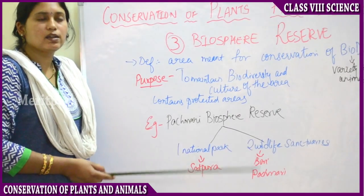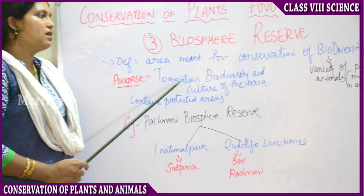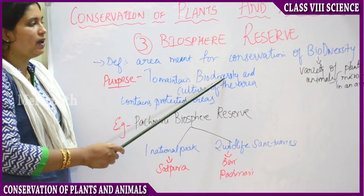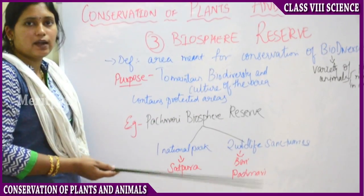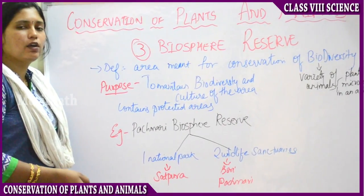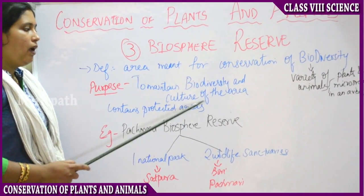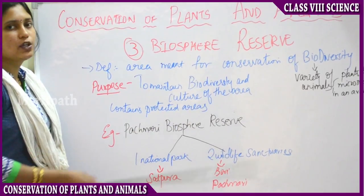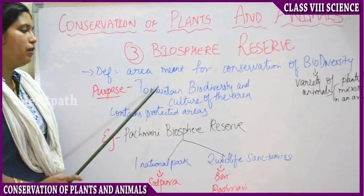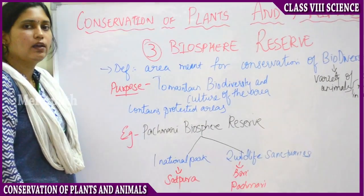To preserve the variety of organisms living in an area, there is a Biosphere Reserve. The purpose of a Biosphere Reserve is to maintain biodiversity — the variety of living organisms on earth. There is a definite necessity for different types of animals to live on earth, and to maintain the culture of that area. Biosphere Reserves are constructed for the sole purpose of maintaining the biodiversity and culture of that area.